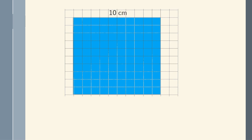This one is a square with 10 cm on one side. Since this is a square, A equals s squared. Substituting the side, that is 10 squared, so we have 100 cm squared. Again, you can count the squares, because area is just the number of squares in a flat surface.